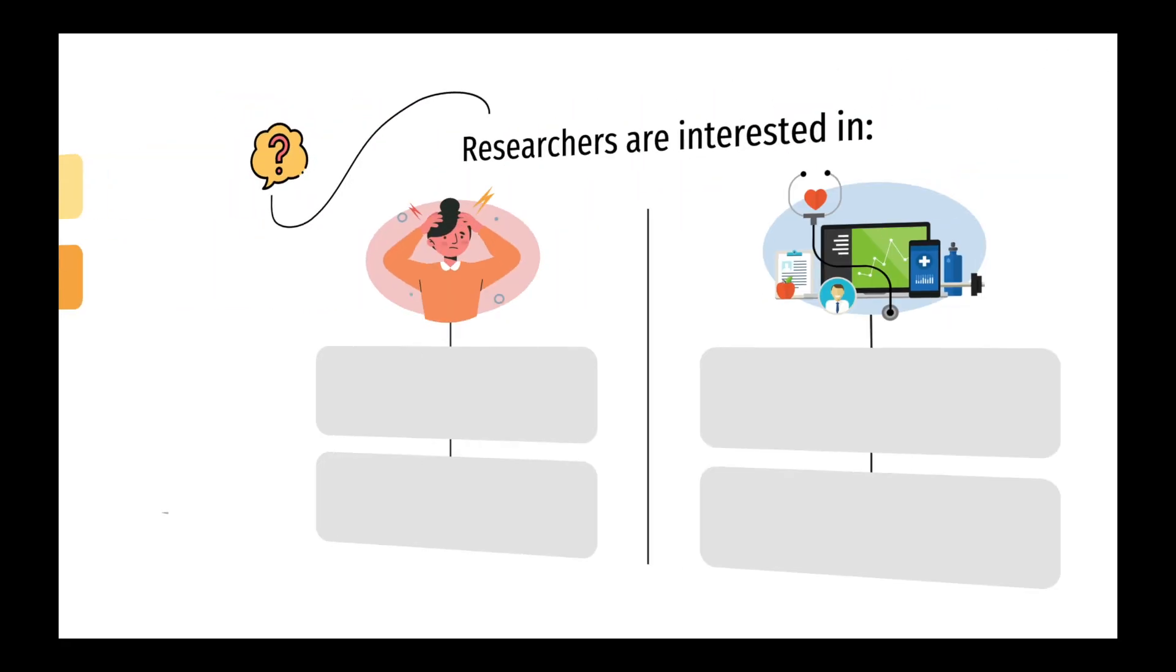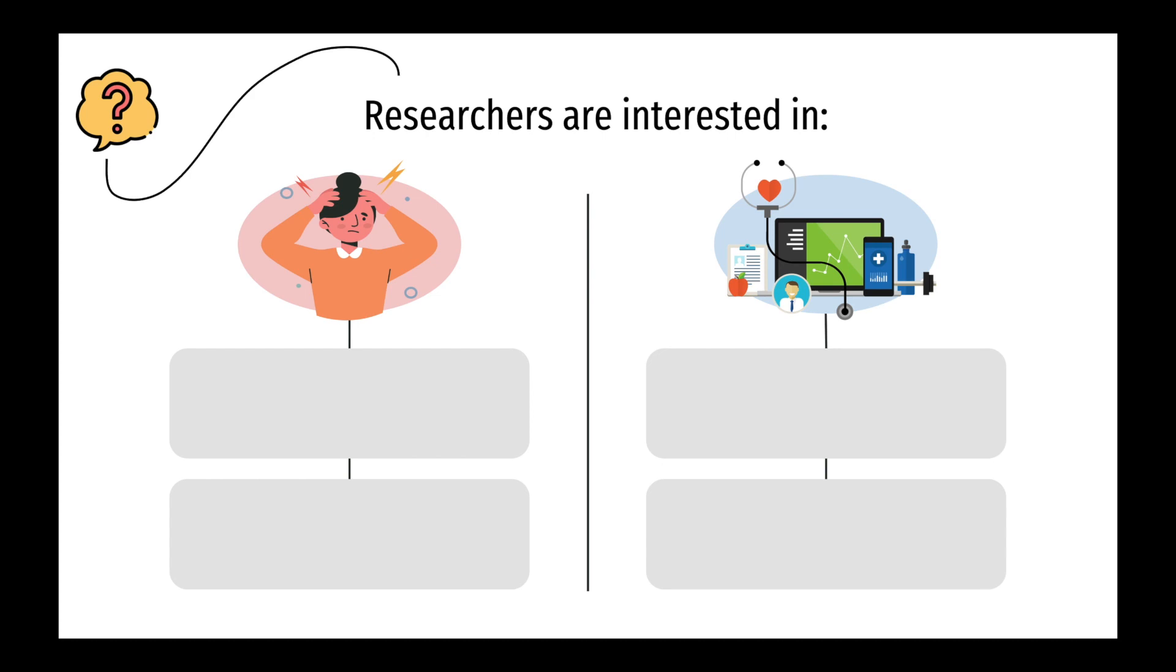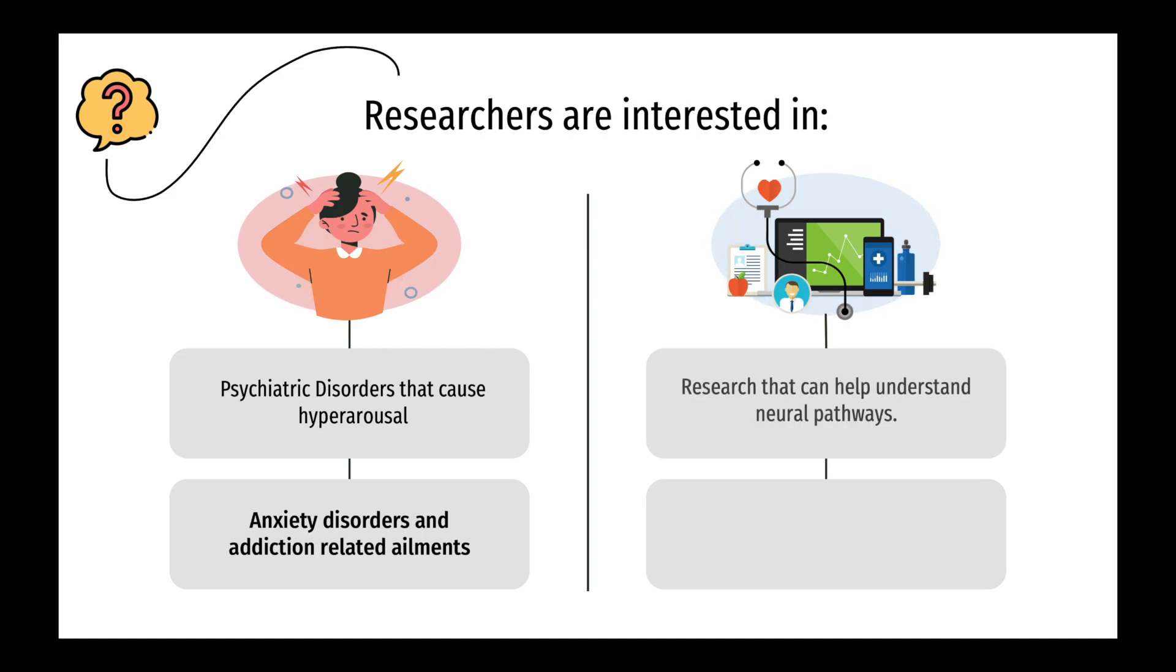Currently, researchers are more interested in understanding how these concepts apply to people dealing with psychiatric disorders that cause hyperarousal, such as anxiety disorders and addiction-related ailments. In particular, researchers are keen in finding the neural pathway involved in an effort to discover better treatment options.